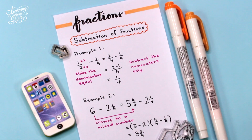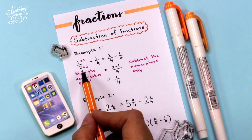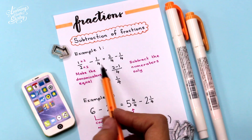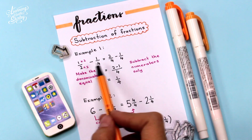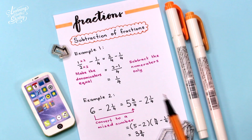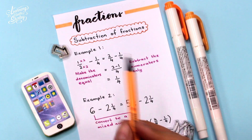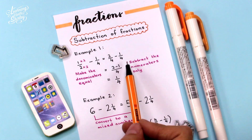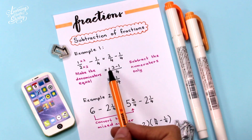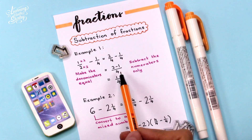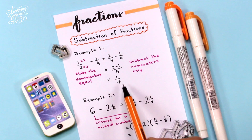How to subtract fractions? Example 1: 1 over 2 minus 1 over 4. First, we look at the denominators, which are 2 and 4. We make the two denominators equal by multiplying 1 over 2 top and bottom by 2, getting 2 over 4. Then 2 over 4 minus 1 over 4 — we subtract the numerators: 2 minus 1 over 4. Therefore, the answer is 1 over 4.